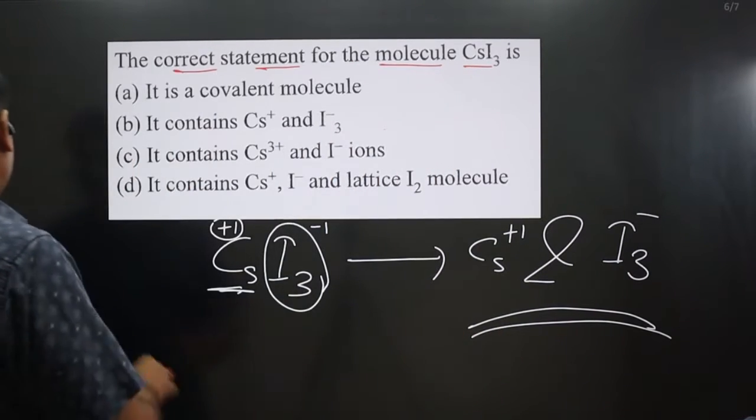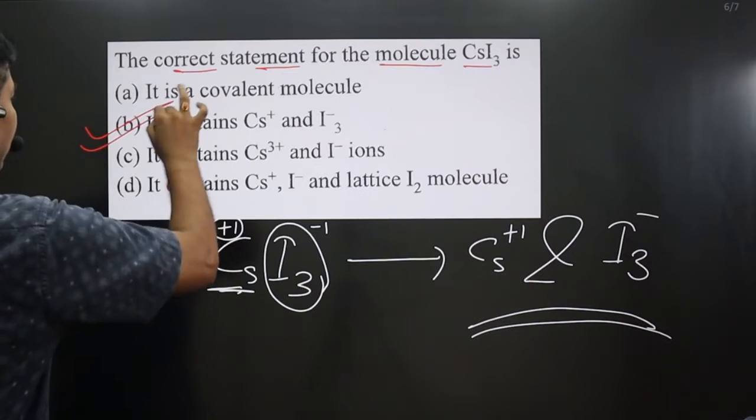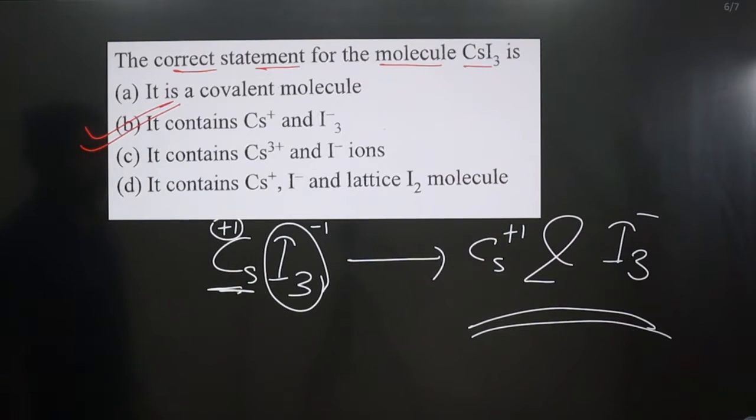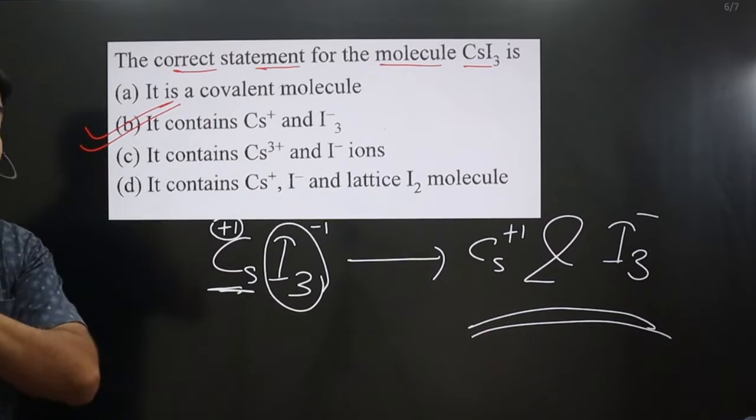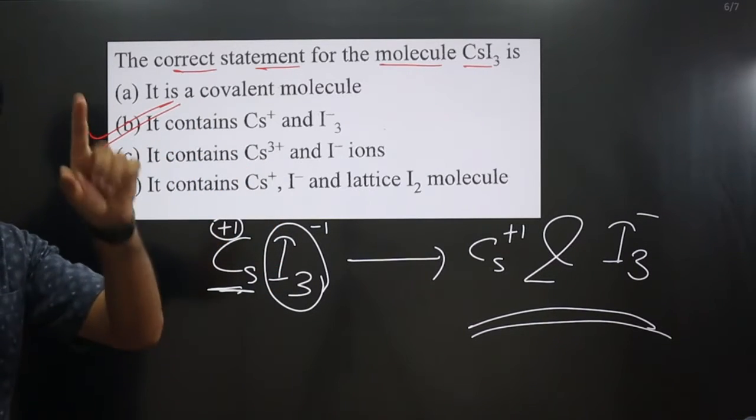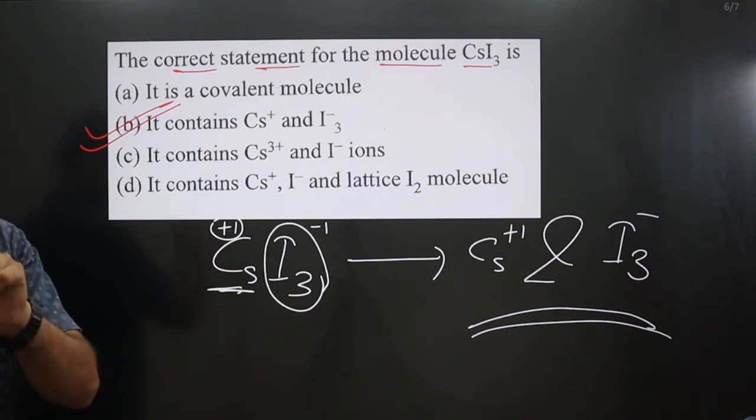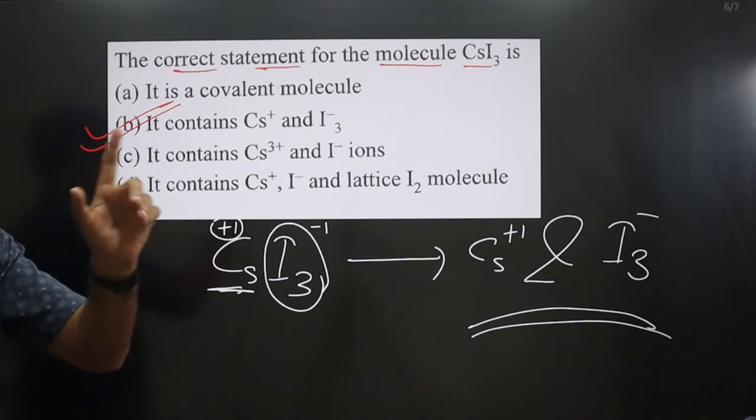So you can see, statement B is correct for this molecule. It contains Cs³⁺? No, it is not correct. First group elements always show plus one charge present in any compound in the universe.